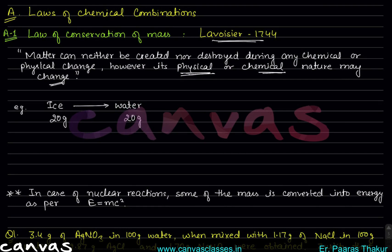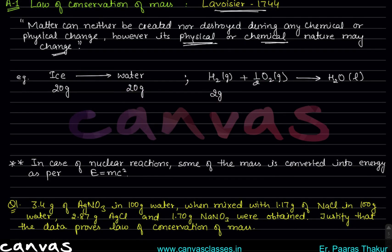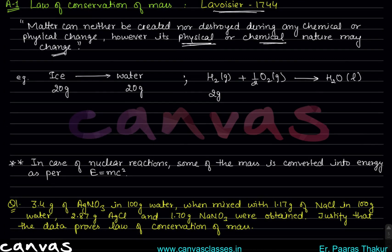H2 gas plus half O2 gas — what do these two form together? H2O liquid. So here if we take 2 gram H2 gas, and half O2 gas that is 16 gram, together the total becomes 18 gram. So total mass of the reactant is equal to total mass of the product — that is the law of conservation of mass.